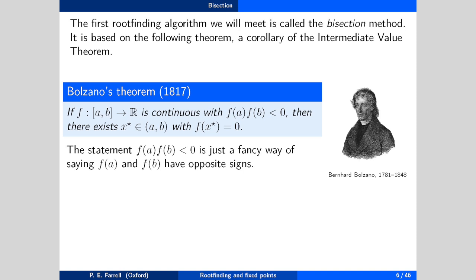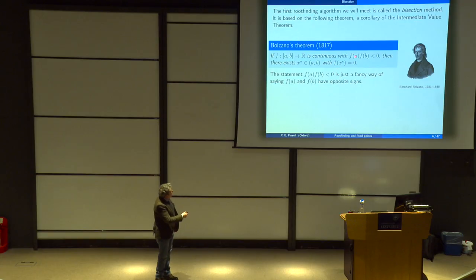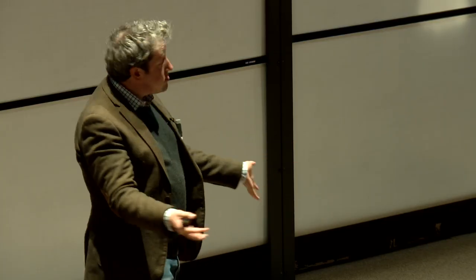Here is the theorem we will rely on. f maps some closed interval [a,b] to the reals, and I'm going to assume that this residual f is continuous — a fairly weak assumption; I don't need derivatives. If I evaluate f at a and f at b and multiply those numbers together and it's less than zero, then there must exist an x-star in the open interval (a,b) with f(x-star) equal to zero. That's Bolzano's theorem of 1817. The condition f(a)·f(b) < 0 is just a fancy way of saying one of them is positive and one is negative.